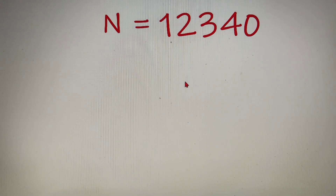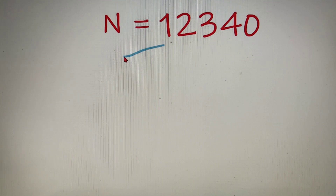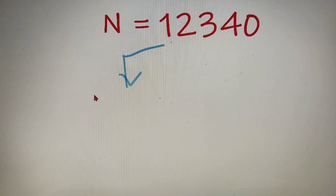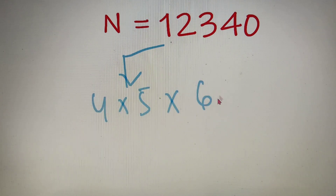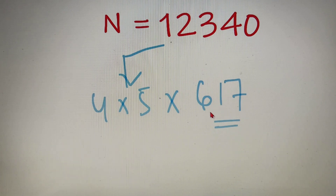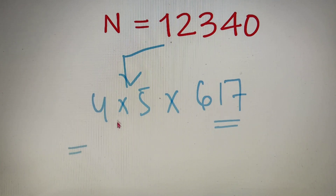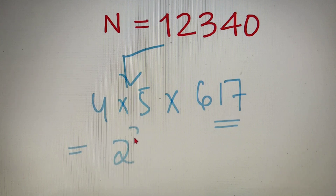Now the first thing that we have to do is prime factorize this number. So the prime factorization of 12340 is nothing but 4 into 5 into 617, where 617 is a prime number, so it cannot be further prime factorized. Now I can say that 4 is equal to 2 squared, so the final prime factorization is 2 squared into 5 into 617.